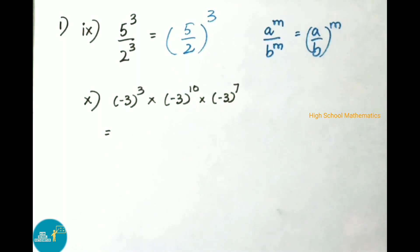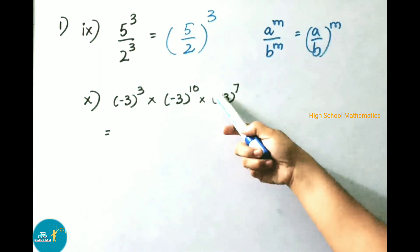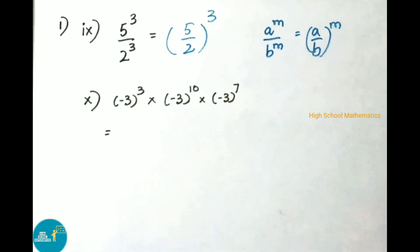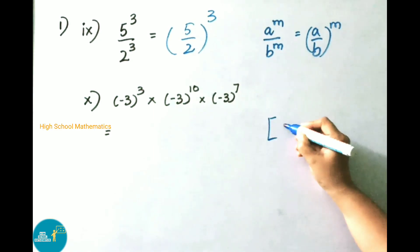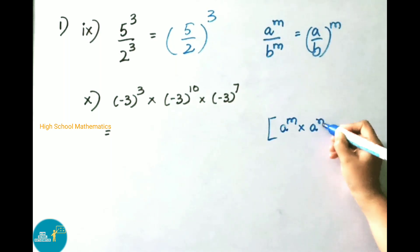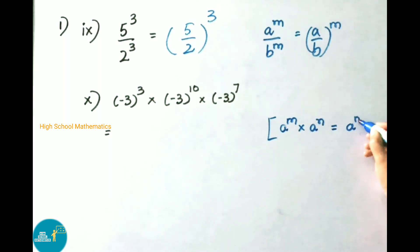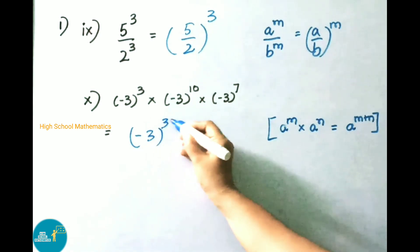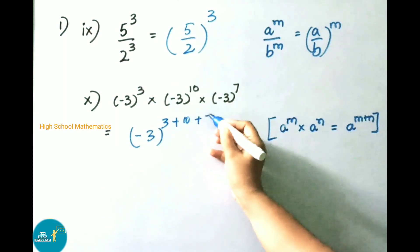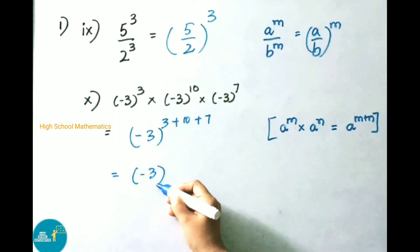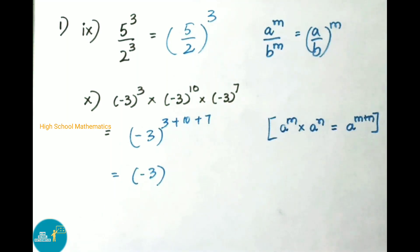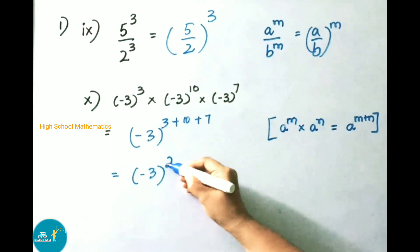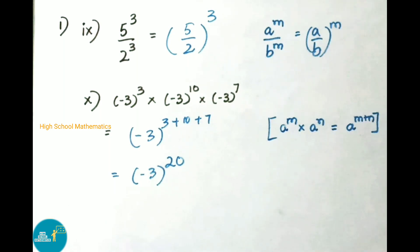Tenth one: minus 3 power 3 into minus 3 power 10 into minus 3 power 7. It is looking like the formula a power m into a power n equals a power m plus n. So it can be written as minus 3 power 3 plus 10 plus 7, that equals minus 3 power 20.